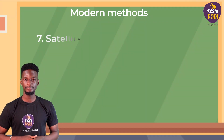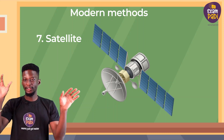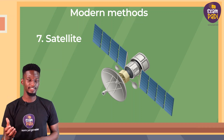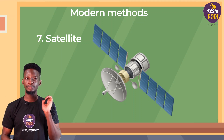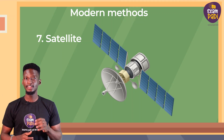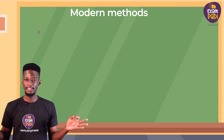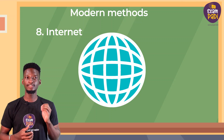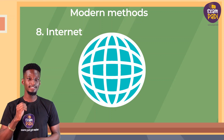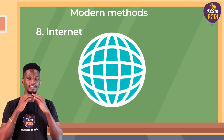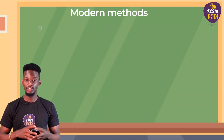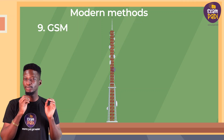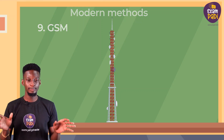7. Satellites — this is a natural or manufactured object that orbits around another. Artificial satellites have a device that transmits information into space, making possible communication relay, weather forecasting, navigation, and broadcasting. 8. Internet — the internet is a global system of interconnected computer networks that uses the internet protocol suite to communicate between networks and devices. 9. GSM — the Global System for Mobile Communication is an improved telephoning method without telephone cables.